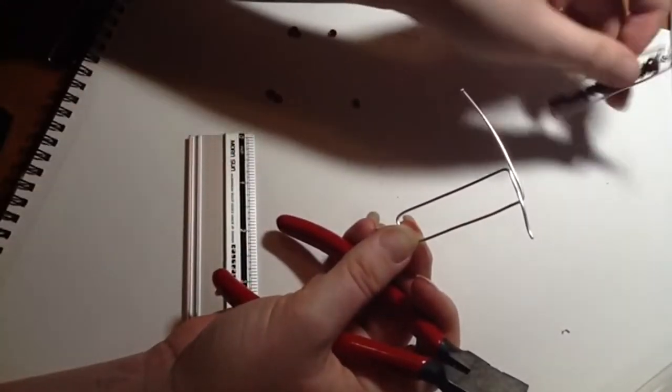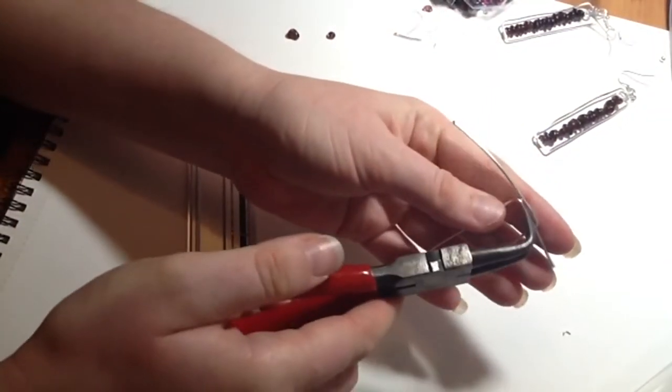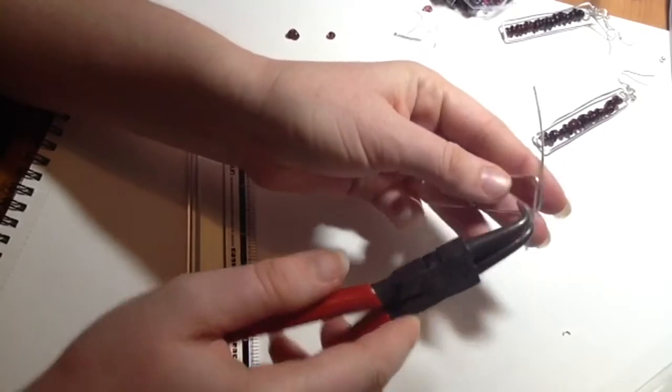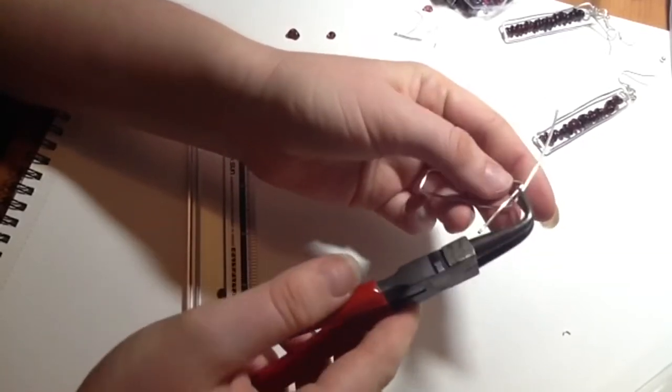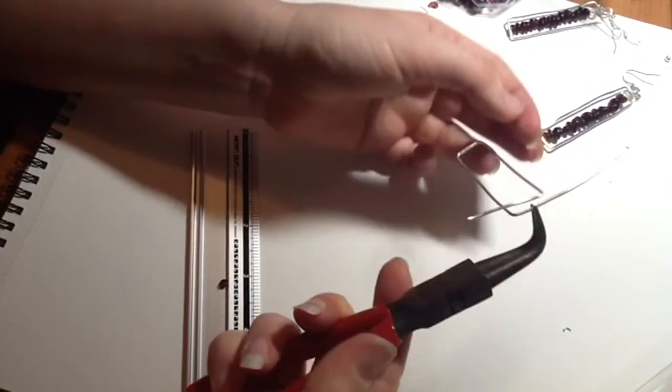So what we're going to do is mark about halfway up our wire. I'm going to create a loop in the top, so we're just going to pull, mark our pliers just over halfway.